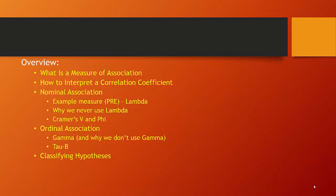We're going to talk about a variety of things today. We're going to talk about what is a measure of association, we're going to talk about how to interpret correlation coefficients, and then we're going to look at nominal level association, ordinal association, and finally we're going to look at how everything we've talked about up to this point helps us classify a wide variety of hypotheses.